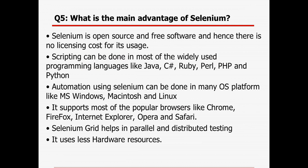What is the main advantage of Selenium? First, Selenium is an open source tool, so no license cost is required. Selenium can be used with most programming languages like Java, C#, Ruby, Perl, PHP, and Python. Selenium can be used on many OS platforms like MS Windows, Mac, and Linux. It supports most popular browsers like Chrome, Firefox, Opera, Safari, and Internet Explorer. Selenium Grid helps in parallel and distributed testing — we can test in different OS and different browsers at the same time. It also uses less hardware resources.